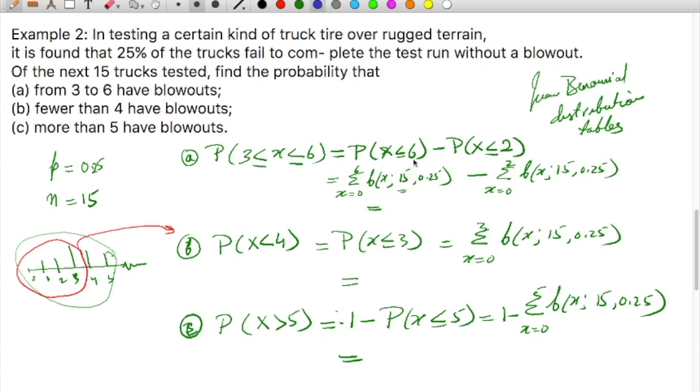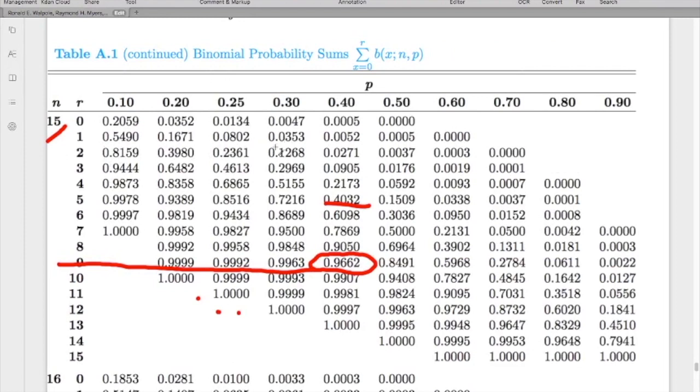For X equals 2, the value is 0.2361. For 3, 0.4613. For 5, 0.8516. And for 6, 0.9434. So now we can calculate.